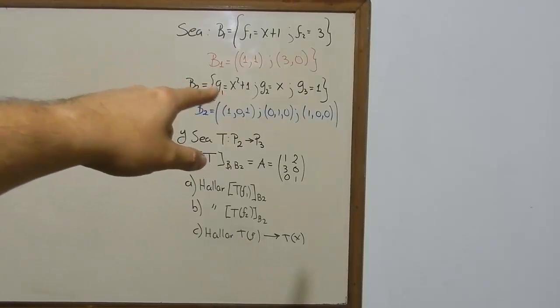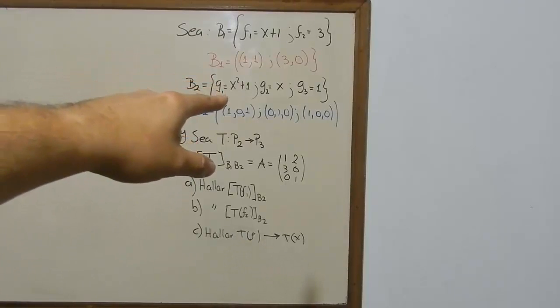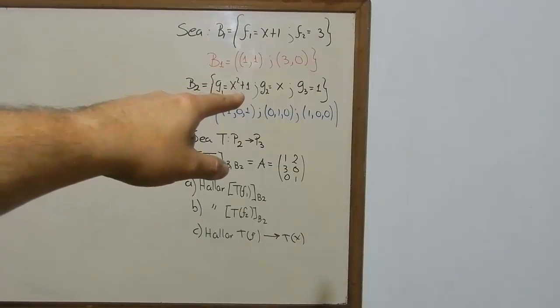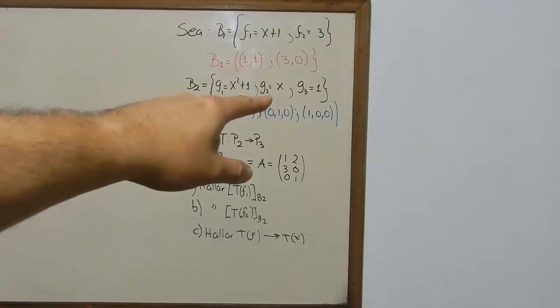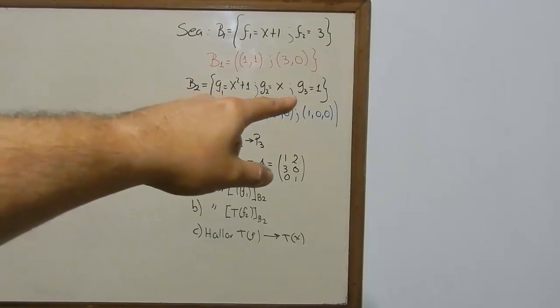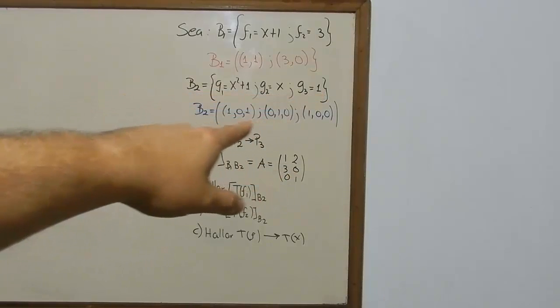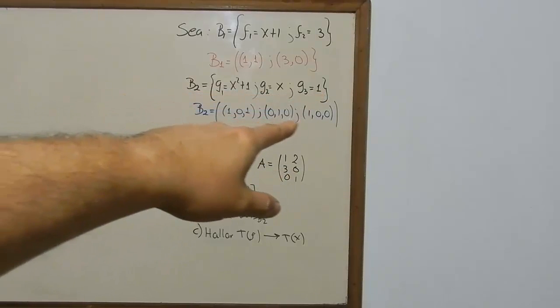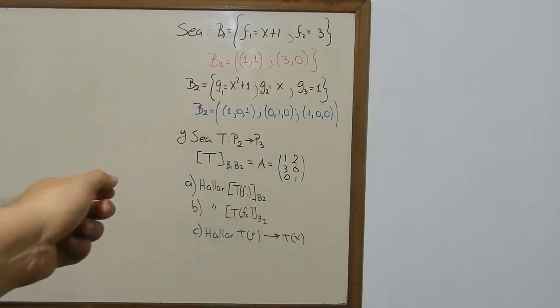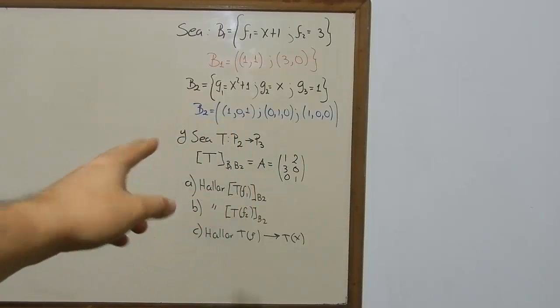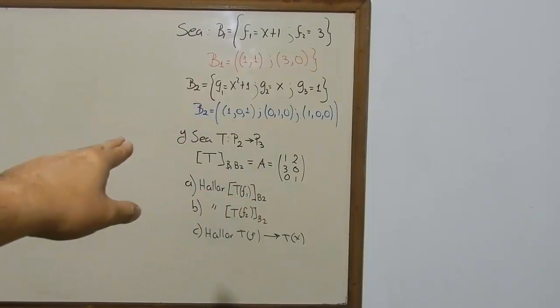We also have B2, which is the second base. It's going to be g1 = x squared plus 1, and as you can see we vectorize it in blue here on the screen.